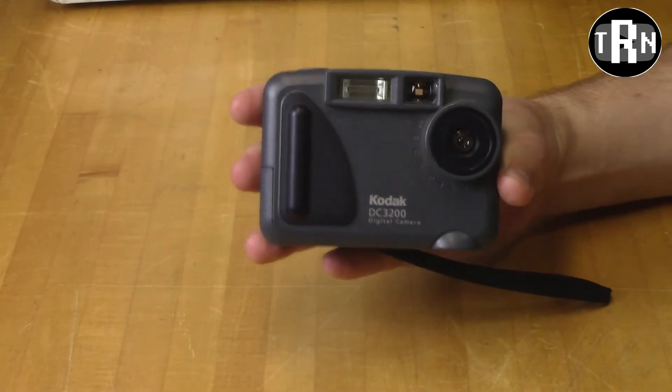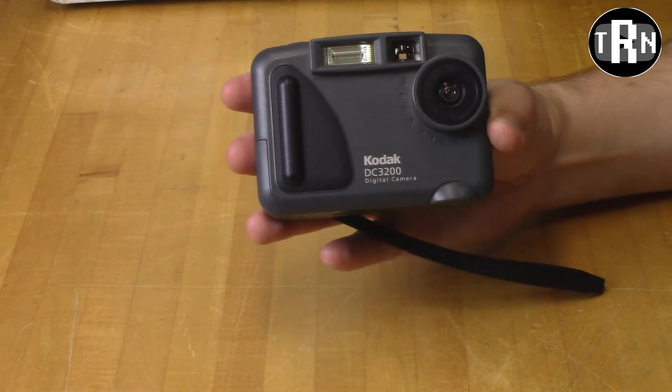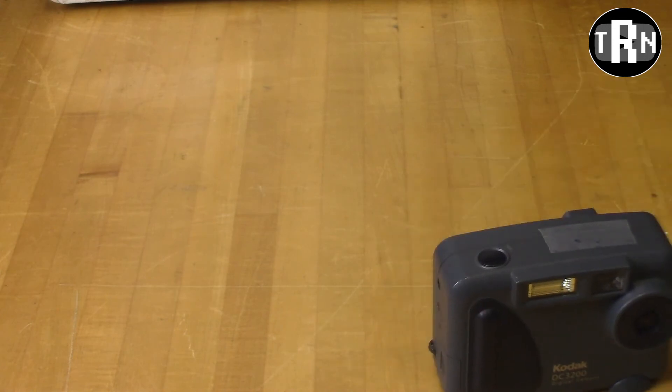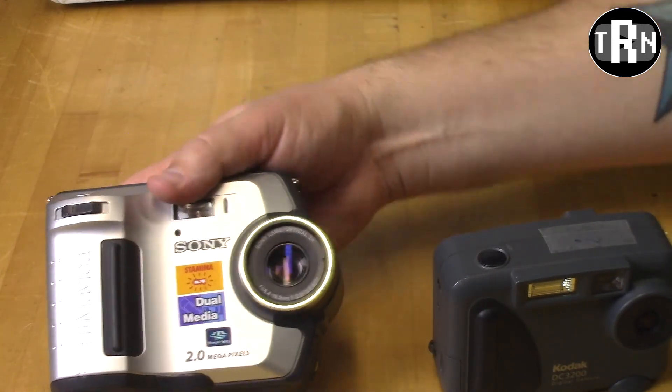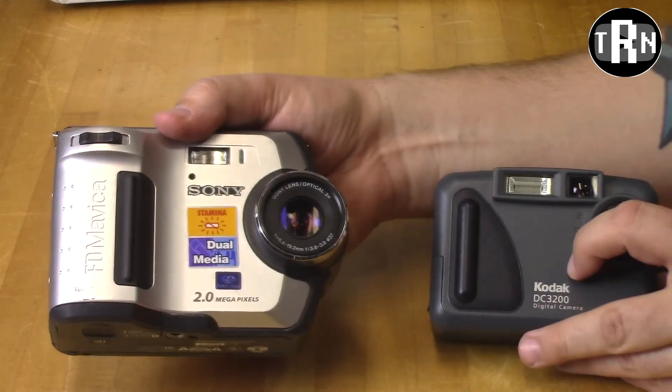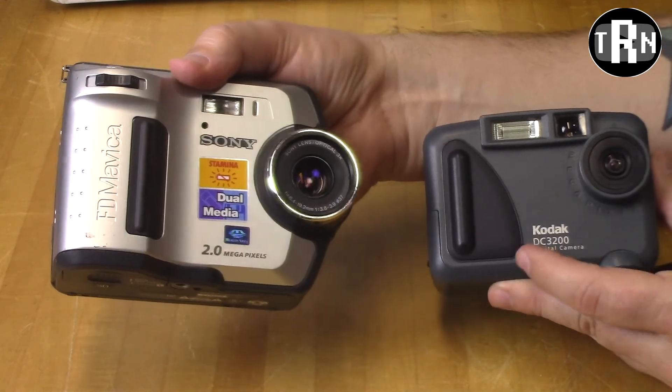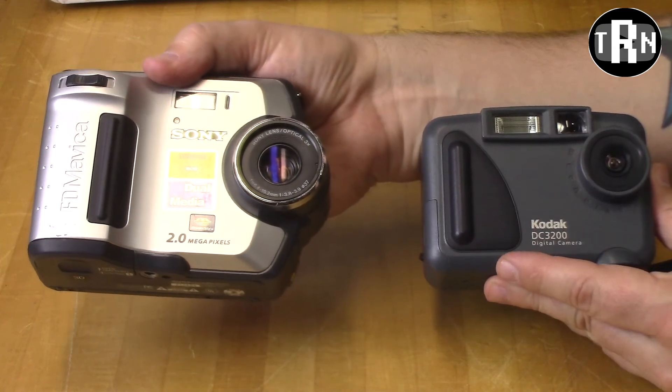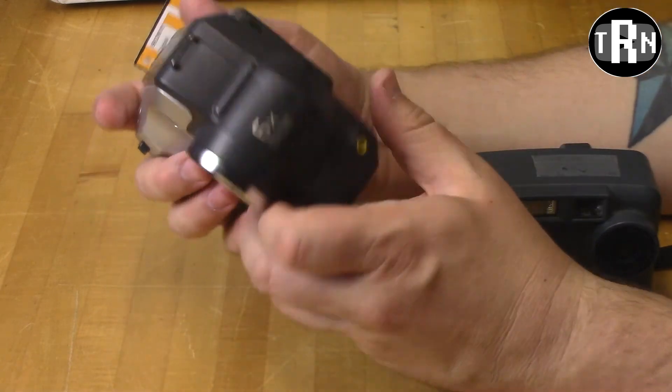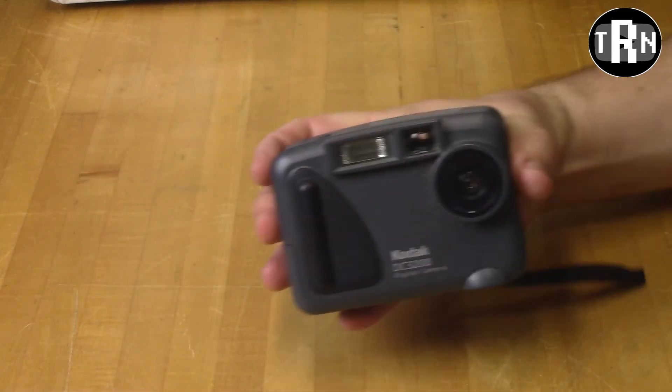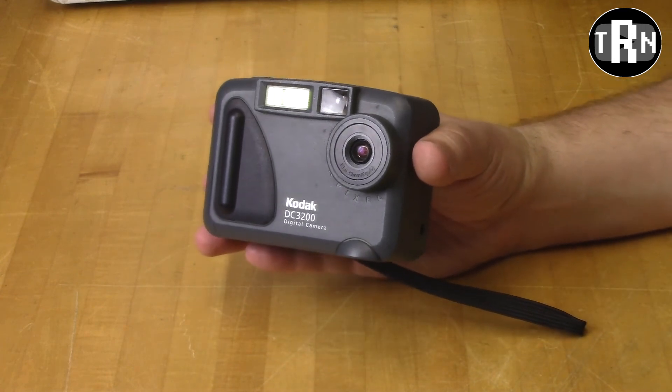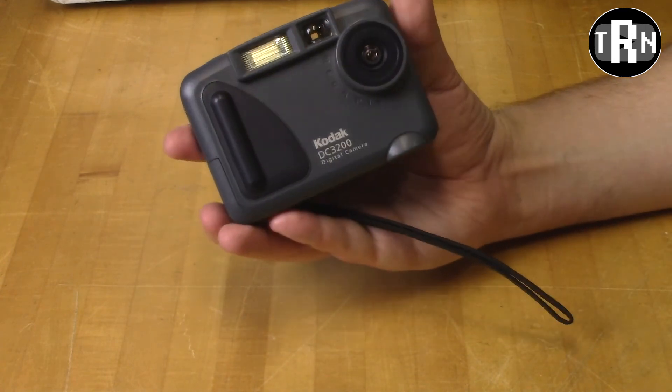One thing I was going to comment, even though this form factor is kind of strange looking with the lens all the way to one side, it's not something that was uncommon. Here's a Mavica from a couple years later. The Mavica had the same form factor for its entire run. Again, lens all the way to one side. The Mavica obviously took the floppy disk. That's why it's so big. This one just copied the same form factor or maybe set that form factor. I don't know if it was just common at the time or what.